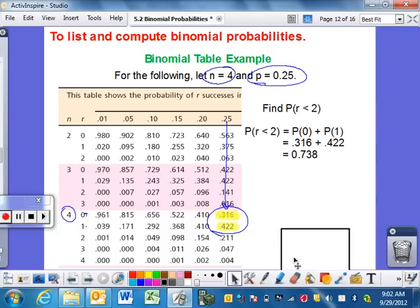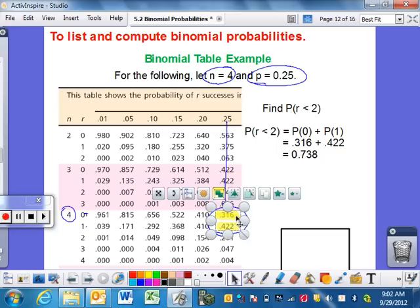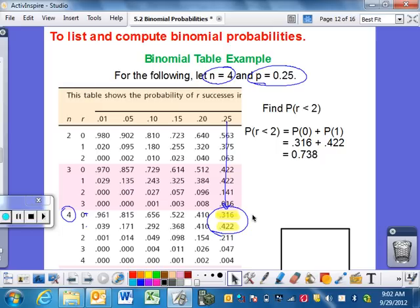And what you need to do is add up those two probabilities to answer the question. So we want to include the probability of no successes would be 31.6%, and the probability of one success would be 42.2% in this situation. So the probability that you get 0 or 1 success would end up being those two added together. And that's how you go about finding a problem where it's less than a number or, likewise, greater than or at least. You always can add up these probabilities if we want more than one possibility for a success.